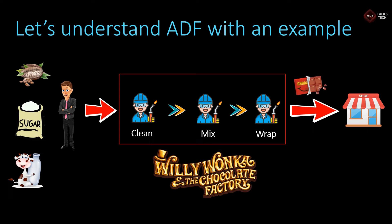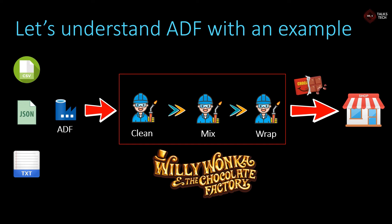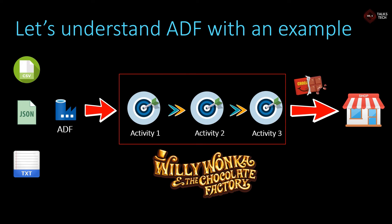The manager manages and drives the entire process — you can replace this manager with Azure Data Factory. Azure Data Factory does the exact job of the manager in this scenario. The raw materials — cocoa seeds, sugar, and milk — can be replaced with multiple data sources that provide files in various formats. For example, one data source generates CSV files, another generates JSON files, and another generates text files. ADF can connect to these data sources, extract all the data, and send it to the next stage.